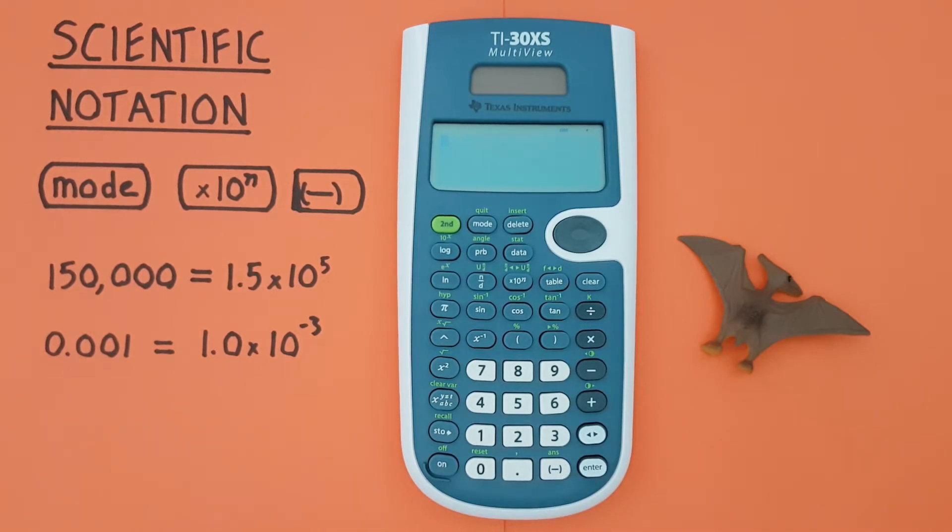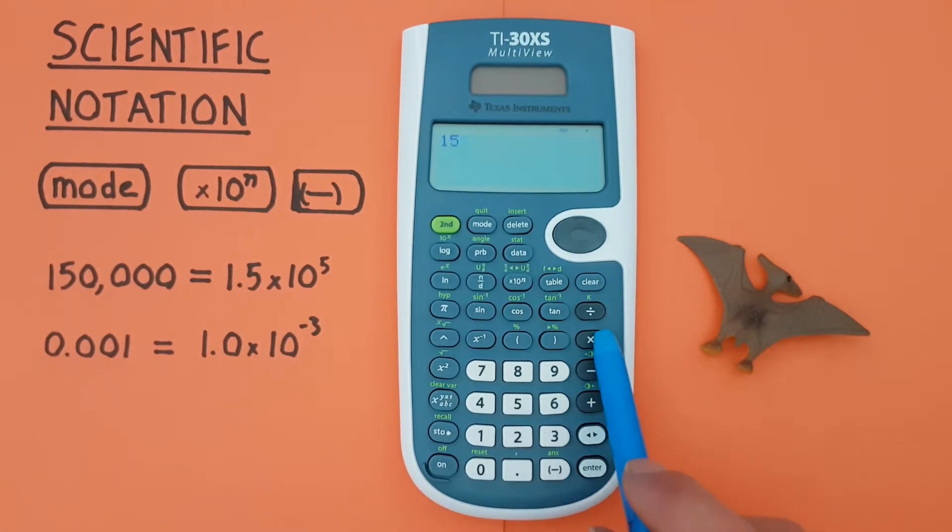Scientific notation is great for simplifying very large or very small numbers. Let's say we did 15 times 10,000 and wanted to get our result in scientific notation.